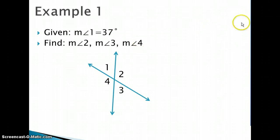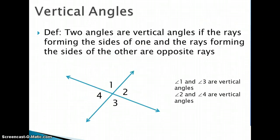The theorem that we have is that these angles, angle 1 and angle 3, the vertical angles, and angle 2 and angle 4, they're going to be congruent. The vertical angle theorem says that vertical angles are congruent.